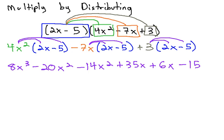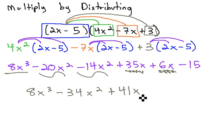Finally, we can finish this problem by combining like terms. We have 8x cubed, a negative 20 and negative 14x squared giving us negative 34x squared. Then we see a 35x and a 6x giving us plus 41x, and then finally a minus 15 to finish out our problem.